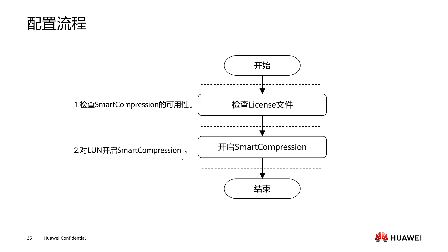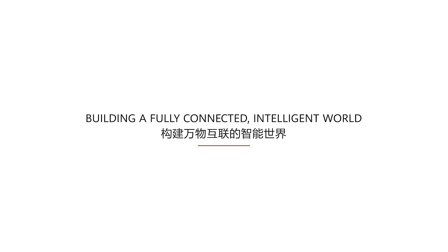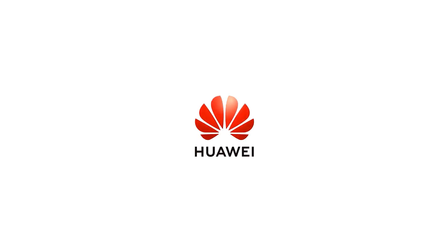Through heavy deletion and compression technology, the two techniques of heavy deletion and compression — either used alone or in combination — effectively reduce redundant data, reduce the physical storage space occupied by the data, and reduce the operating costs of our enterprise. These are the characteristics of deduplication and compression. That's the content of this lesson. Thank you for studying. See you next class.